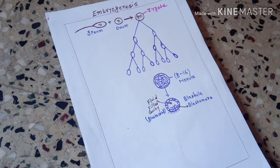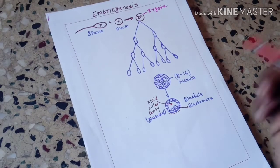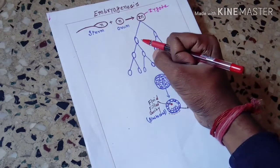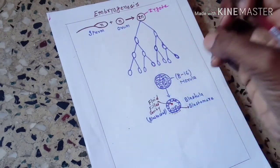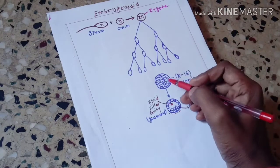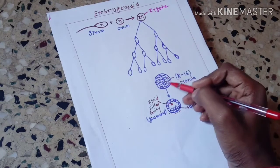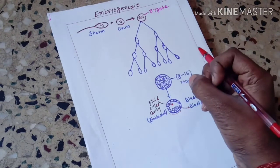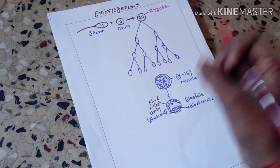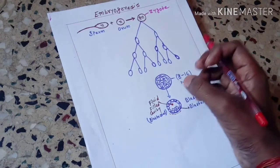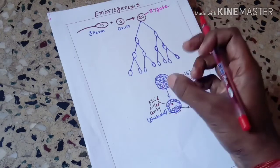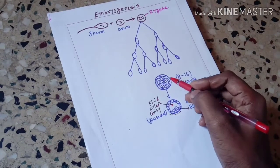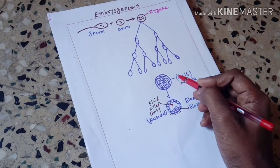The morula is a tightly compact cell structure. It is totally compact — there is no gap between the cells, and there is no cavity. Assume it is a hard, solid sphere. So this eight to sixteen cell stage we call morula.